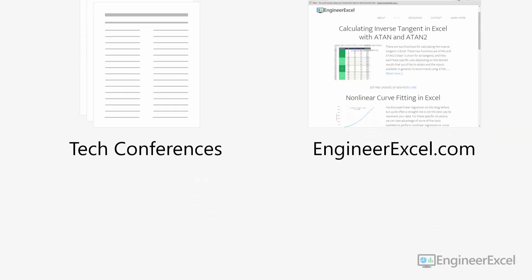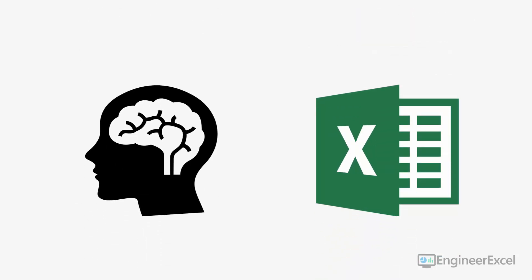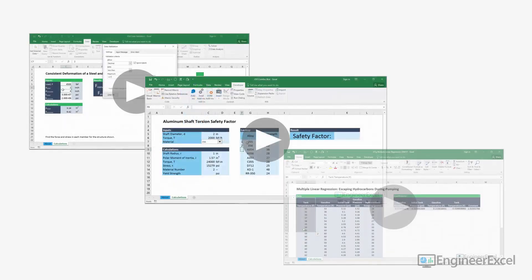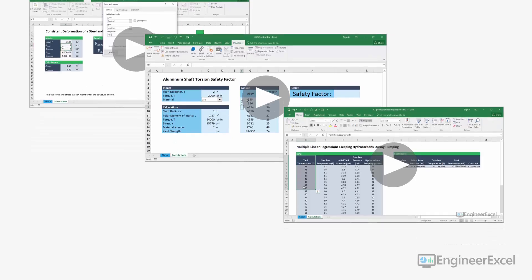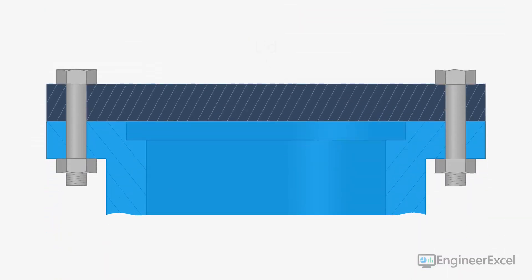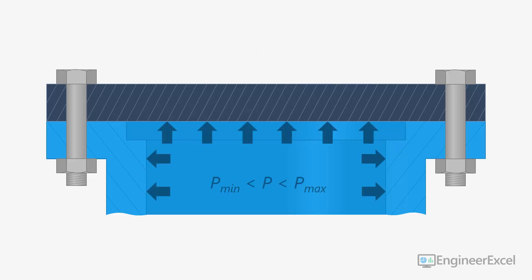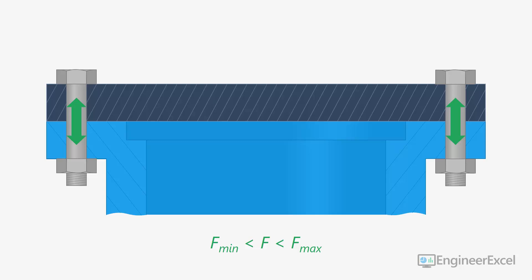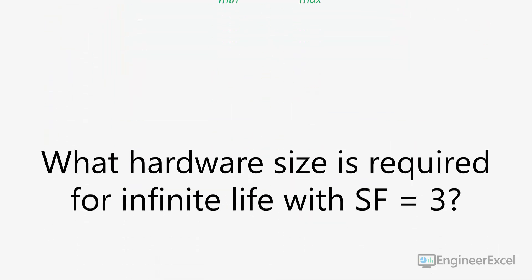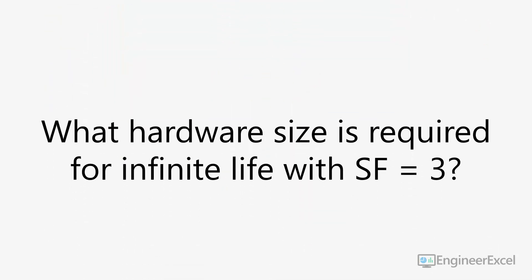Remember those senior engineers that built those amazing spreadsheets at my company? Now I'm even able to help them with the Excel stumbling blocks they encounter. I've put together this three-part video series to give you my best strategies for setting up and solving complex engineering problems in Excel. I'll show you these strategies by walking through an example problem that deals with the lid of a pressure vessel. The lid is exposed to a pressure that cycles continuously between a minimum and maximum, and this changing pressure results in fluctuations in the bolt forces and could result in fatigue failure if the hardware is not chosen properly. So we need to determine the hardware size to provide infinite life of this joint with a safety factor of 3.